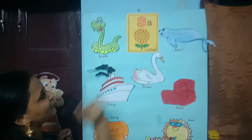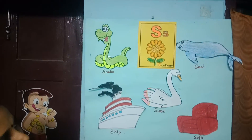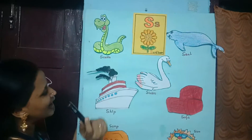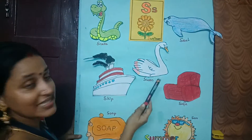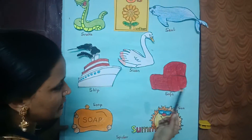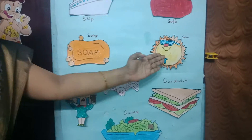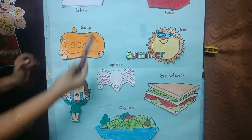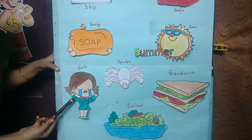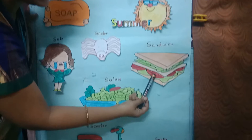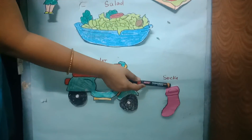Okay children, we will recall once again. S as in sunflower. S as in snake. S as in seal, which lives in water. S as in ship. S as in swan. S as in sofa. S as in soap. S as in sun and summer. S as in spider. S as in sob. S as in salad. S as in sandwich. S as in socks. And S as in scooter.